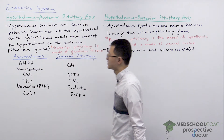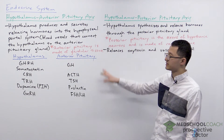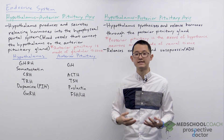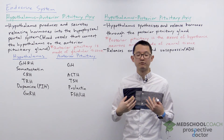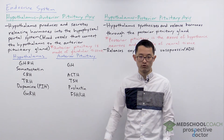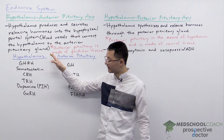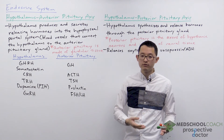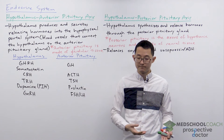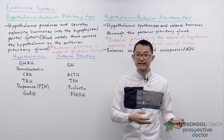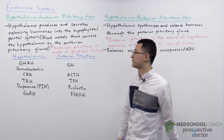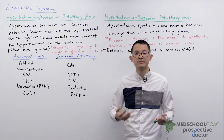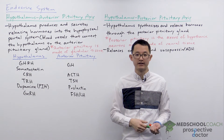Now let's go through each of these in more detail. In the hypothalamus-anterior pituitary axis, the hypothalamus produces releasing hormones and releases them into the hypophysial portal system. The hypophysial portal system consists of blood vessels that connect the hypothalamus to the anterior pituitary gland, which is separate from the hypothalamus and is made of glandular tissue — the same type of tissue you'd expect other endocrine glands to be made of.